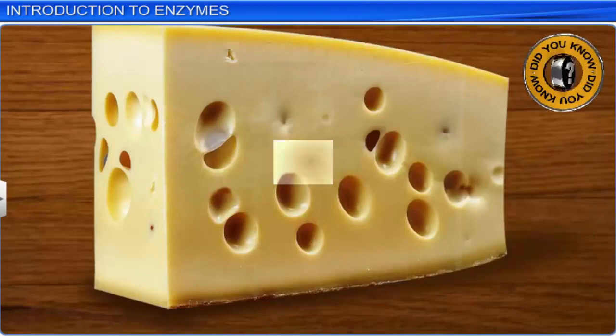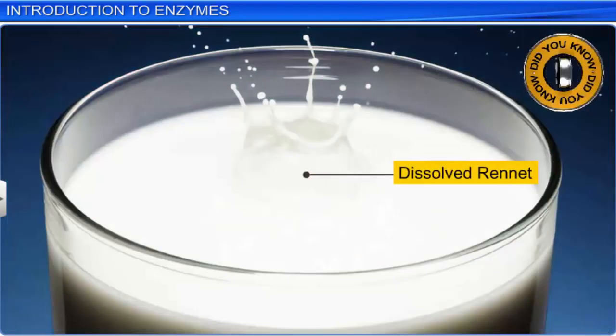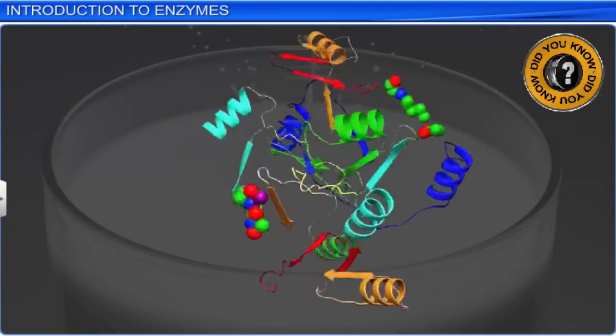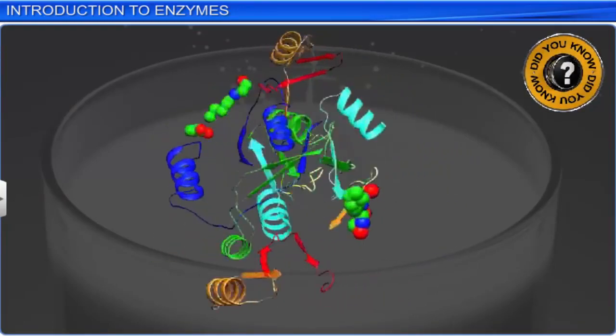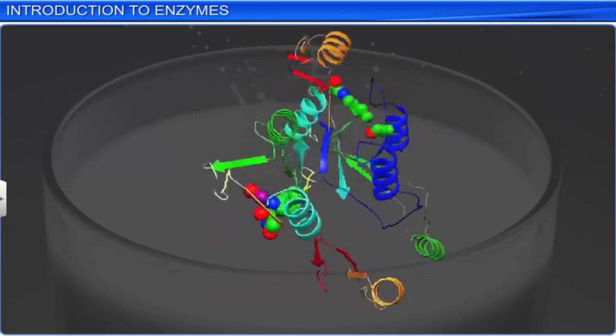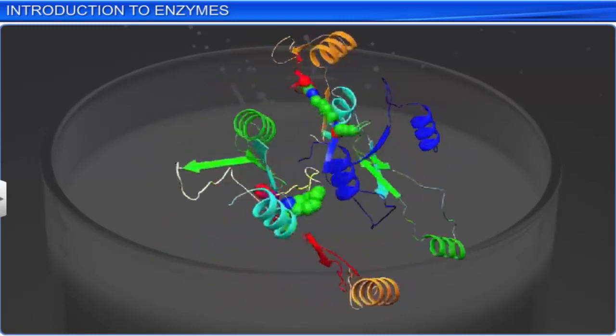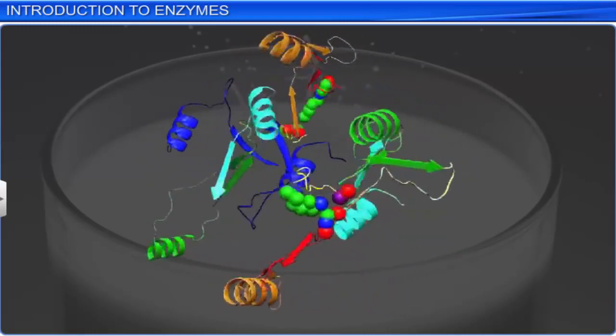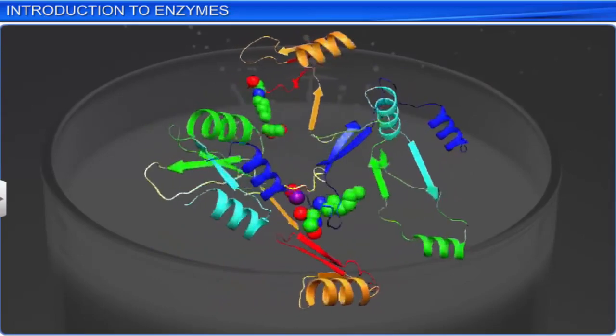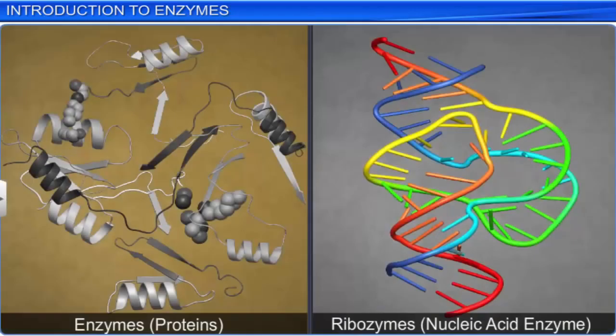Did you know that cheese is produced with the help of rennet, which is a natural complex of many enzymes? Enzymes act as biological catalysts in a living system and change the rate of reactions without themselves getting altered. While most enzymes are proteins, some nucleic acids also behave like enzymes. These nucleic acids are called ribozymes.